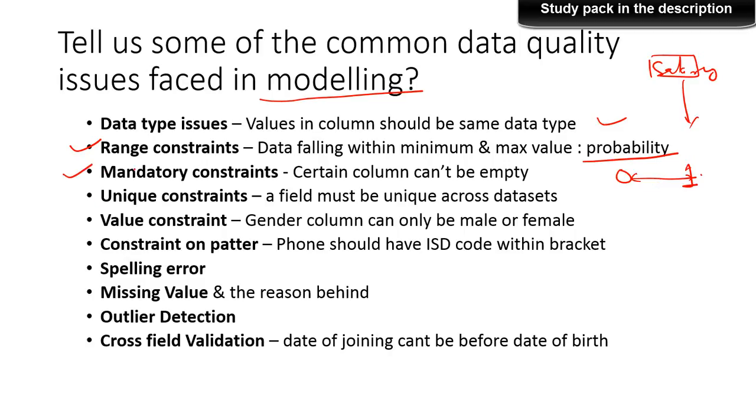Mandatory constraint. In certain data, in certain variables, they cannot have zeros or empty values. So ensure that it doesn't have a particular value. It could be 0, it could be a certain number, or it could be the case that the column cannot be empty. So that is another important check.